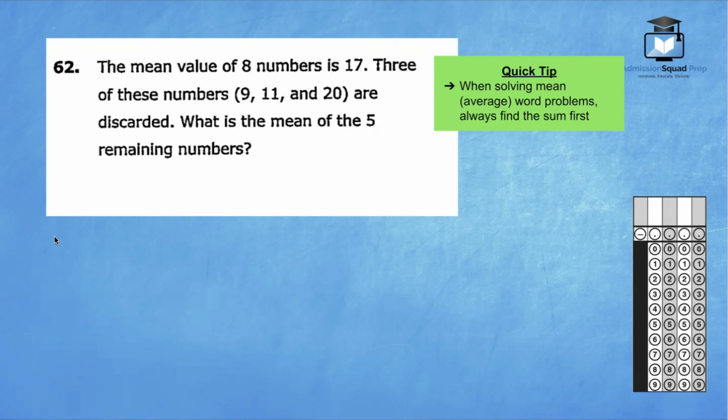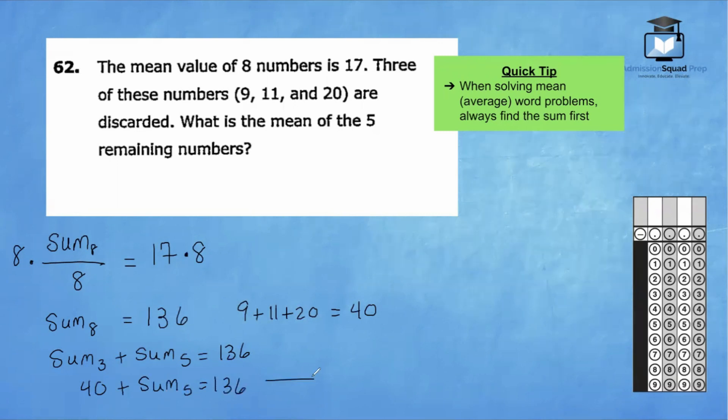Let's go ahead and set up our equation. We know that when finding the average, we're typically going to find the sum of eight numbers divide by eight to get 17. The opposite of dividing by eight is to go ahead and multiply both sides of this equation by eight. So we know that the sum of those eight numbers is 136. Three of these numbers is 9, 11, and 20. So 9 plus 11 plus 20 is equal to 40. So if the total sum is 136, we know that the sum of the three numbers plus the sum of the remaining five numbers must give us 136. I will replace the sum of these three numbers right here with 40. So 40 plus the sum of five numbers is 136. So naturally, we have that the sum of five numbers is 96.